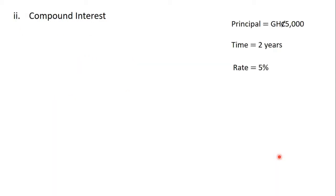The second part of the question says that we should calculate the compound interest. Once again, the principal is five thousand Ghana cedis, the time is two years, and the rate is five percent.